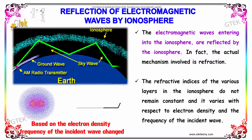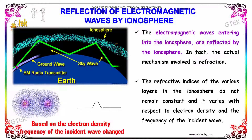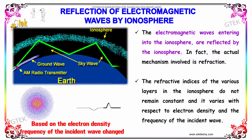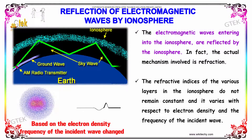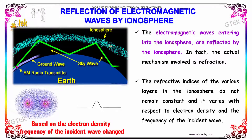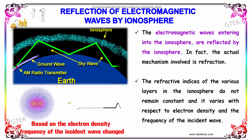If the waves are coming in from sunlight, they automatically start refracting and will enter into the earth's surface. The refractive indices of the various layers in the ionosphere do not remain constant — they vary with the electron density and the frequency of the incident waves.